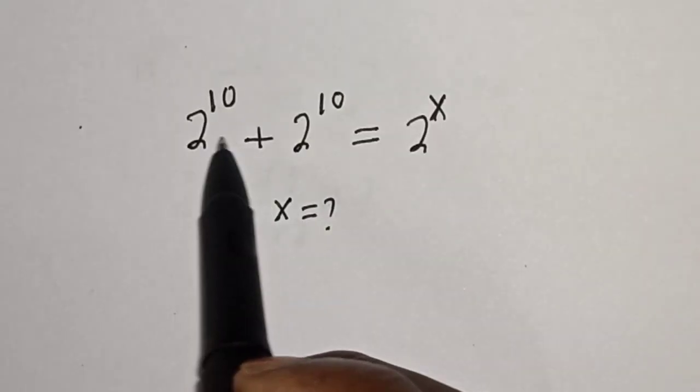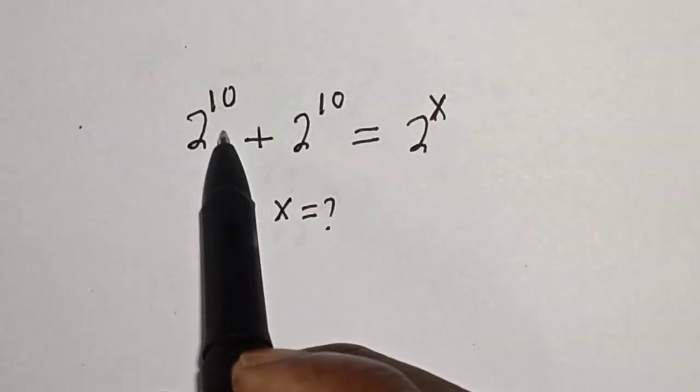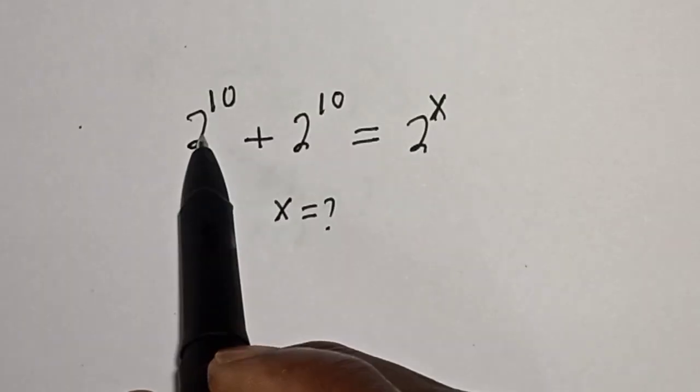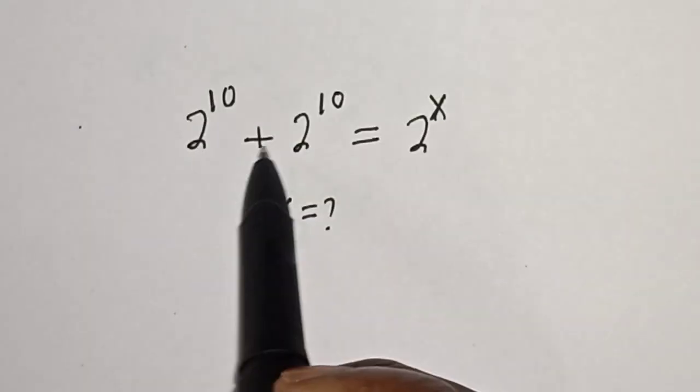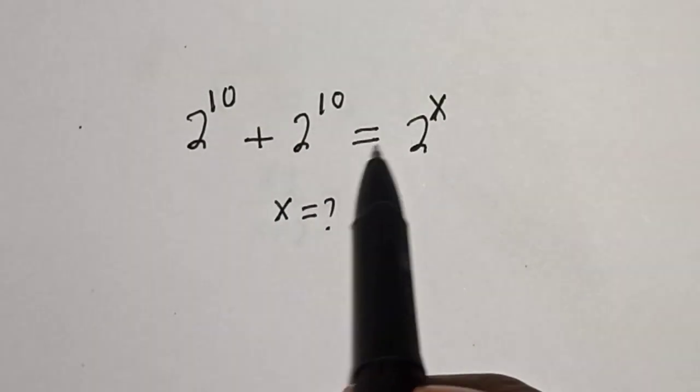Hello, welcome to Magis. In this class we want to find the value of x from this equation: 2 raised to power 10 plus 2 raised to power 10 is equal to 2 raised to power x.